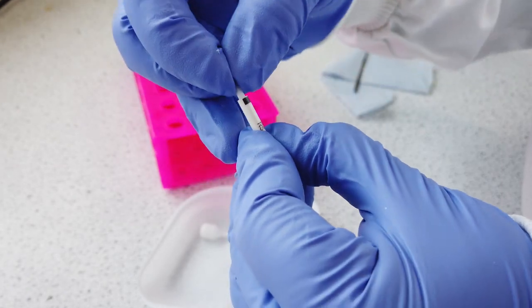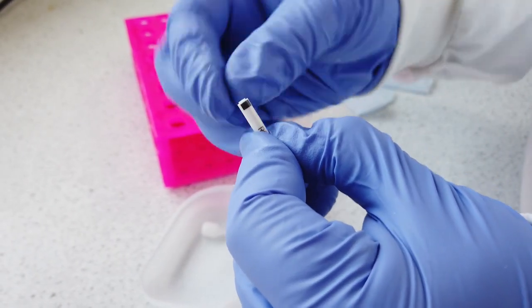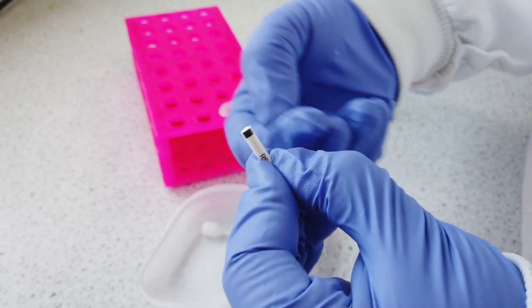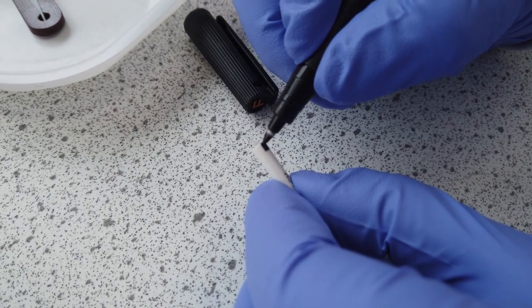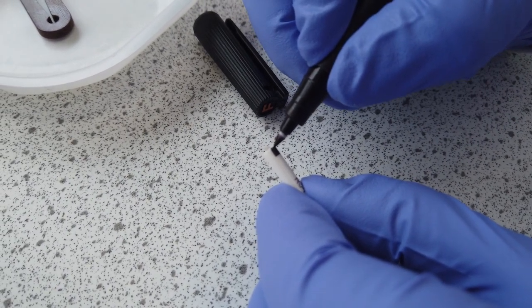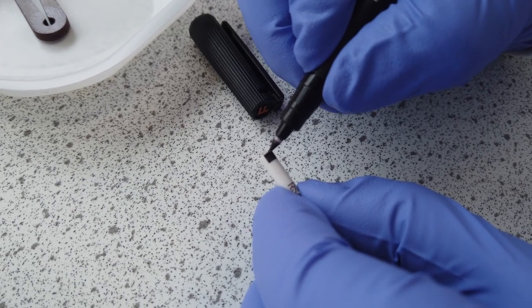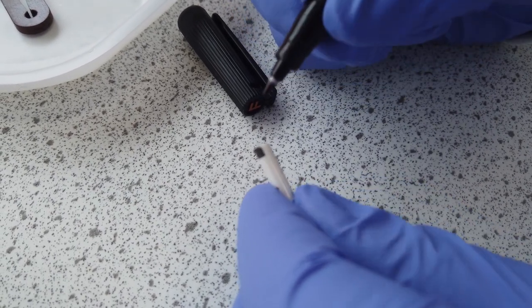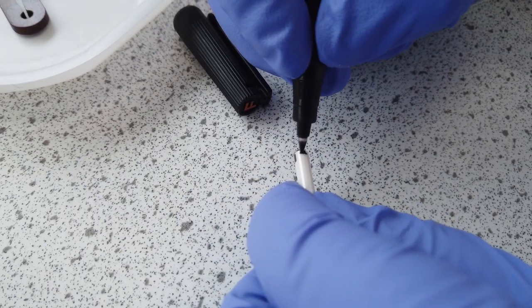After loading your sample, place the top cap into the sleeve and push it down until it is in line with the sleeve. Before you insert the rotor into the NMR spectrometer, draw a black line covering approximately half of the rim using a black permanent marker. This will act as a laser mark and allow the spectrometer to correctly detect the spinning.